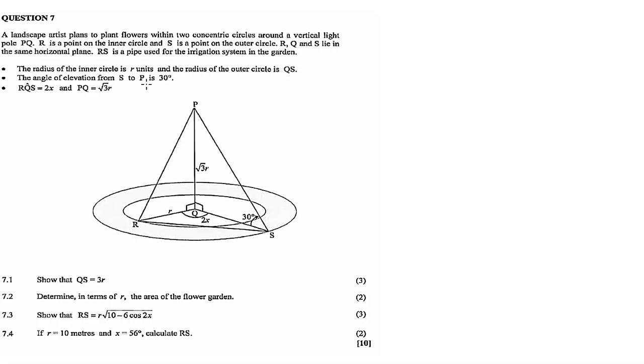The angle of elevation from S to P is 30 degrees, and angle RQS is 2x. PQ is square root 3r. For 7.1, we need to find the value for QS. So QS is in triangle PQS, and we're going to use the triangle to find that.